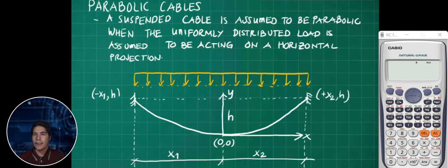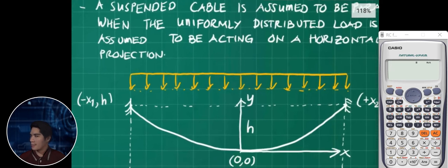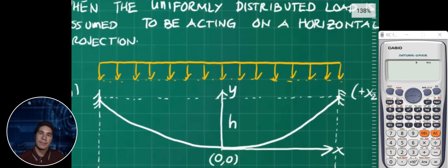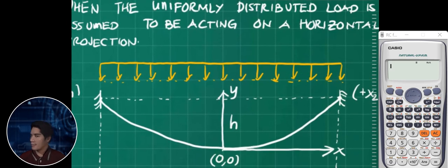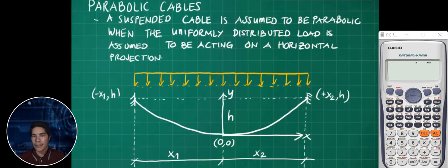To start with parabolic cables: a suspended cable is assumed to be parabolic if and only if the uniformly distributed load is assumed to be acting on a horizontal projection, as shown here with the horizontal projection of the uniform load.